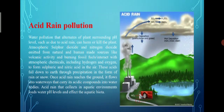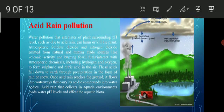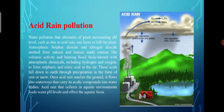So let's talk about acid rain pollution. Alterations of plants surrounding pH levels, such as those due to acid rain, can harm or kill plant life. Atmospheric sulfur dioxide and nitrogen dioxide, emitted from natural and human-made sources like volcanic activity and burning fossil fuels, interact with atmospheric chemicals including hydrogen and oxygen to form sulfuric and nitric acid in the air. These acids fall to Earth through precipitation in the form of rain or snow. Once acid rain reaches the ground, it flows into waterways that carry its acidic compounds into water bodies, lowering water pH levels and affecting the aquatic biota.